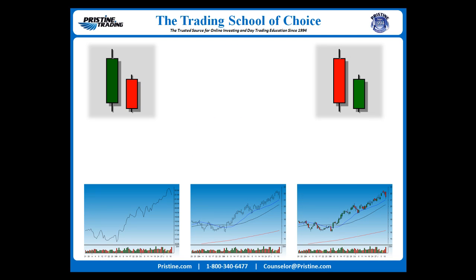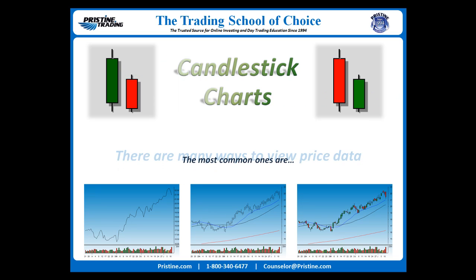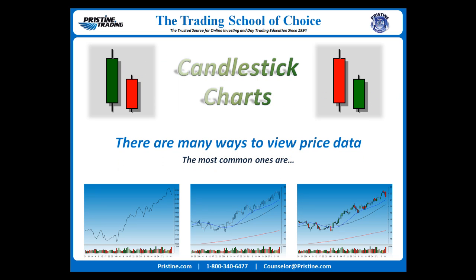There are many ways to view price data. The most common ones are line charts, bar charts, and candlestick charts. Line charts only offer one piece of data per period, which is typically the closing price. Bar charts offer three or four pieces of information per period, but can be confusing to read.